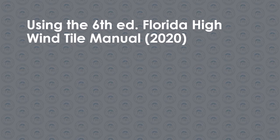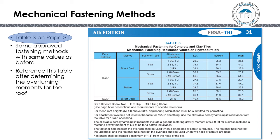Using the Florida 6th Edition High Wind Manual, let's look at some tables and how they're going to be used. Table 3, Mechanical Fastening Methods, is found on page 31 of the 6th edition. It lists the various attachment methods and the mechanical fastening resistant values in foot-pounds over plywood for low, medium, and high-profile tile — the aerodynamic uplift moments recorded in testing — which you'll need to meet or exceed your design uplift moments found on other tables.